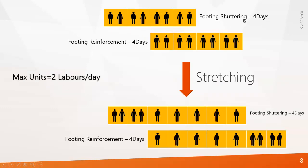The next technique is stretching. Footing shuttering of four days and footing reinforcement of four days — here also you have only two laborers. On the third day, again you need more resources. Stretching means you are simply reducing the labor force and increasing the duration of the activity. On the first day, two laborers were working. But when it reaches the third day, one labor works on footing shuttering and another labor works on footing reinforcement. When the labor force decreases, the activity duration automatically increases. This is what stretching means — the activity stretches because the labor force is less.